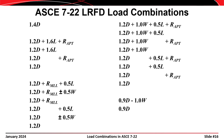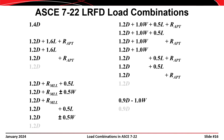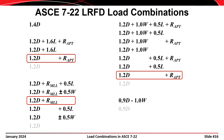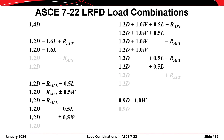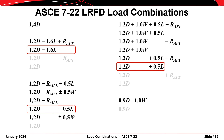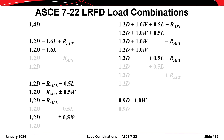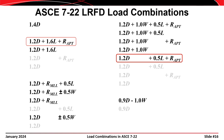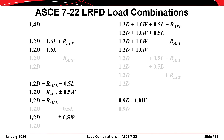If we examine all of the permutations next to each other, some combinations can obviously be eliminated. For combinations including only dead load, 1.4 times D will govern over 1.2 times D or 0.9 times D. For combinations including only dead load and roof loading, 1.2 times D plus 1.0 times R sub MLL will govern. For combinations with dead load and live load only, 1.2 times D plus 1.6 times L will control. And for combinations with dead load, live load, and roof loading, 1.2 times D plus 1.6 times L plus 1.0 times R sub APT will govern.